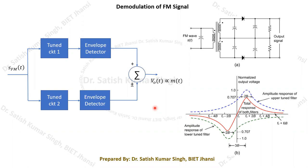Welcome again to the course module on communication engineering. In the last lecture, we discussed the demodulation of the FM signal, specifically the balanced slope detector, which is the frequency discrimination technique. Today we are going to discuss one more important topic related to FM demodulation, which is PLL — the phase locked loop. The PLL is most popularly used for demodulation of FM signals because it can also be used in low signal-to-noise ratio conditions.